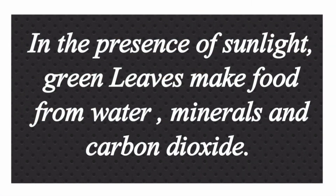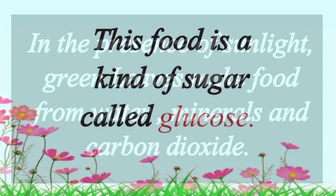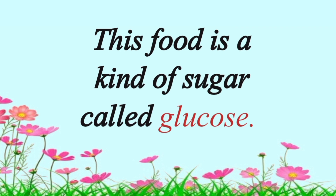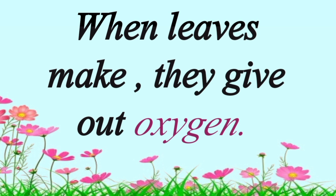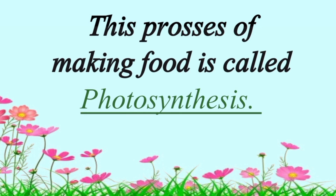In the presence of sunlight, green leaves make food from water, minerals, and carbon dioxide. This food is a kind of sugar called glucose. When leaves make food, they give out oxygen. This process of making food is called photosynthesis.